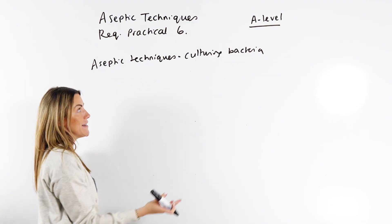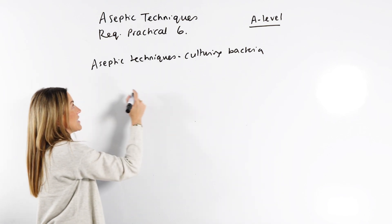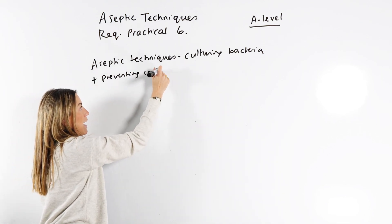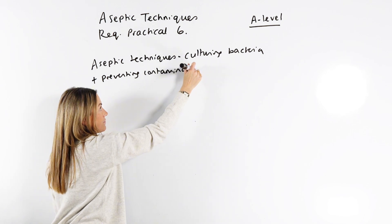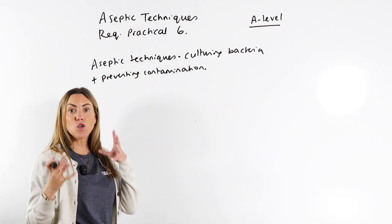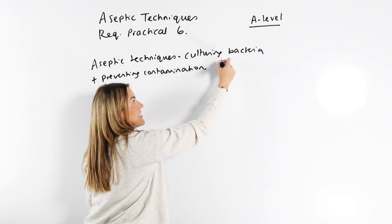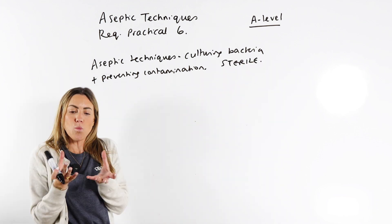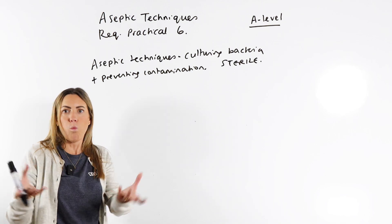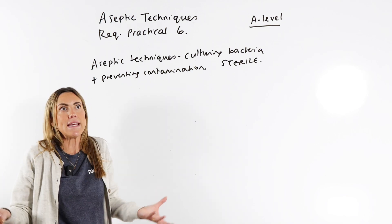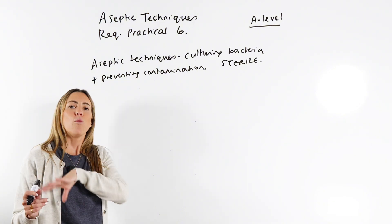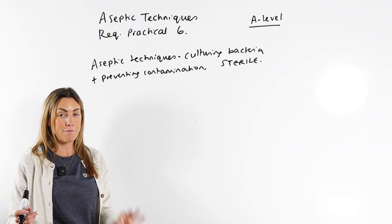You've probably all done this practical by now, but you're culturing bacteria and preventing contamination by making sure you're working in a sterile environment because you want to grow or culture one strain of bacteria, maybe E. coli. You do not want to contaminate your culture with other bacteria from the environment.